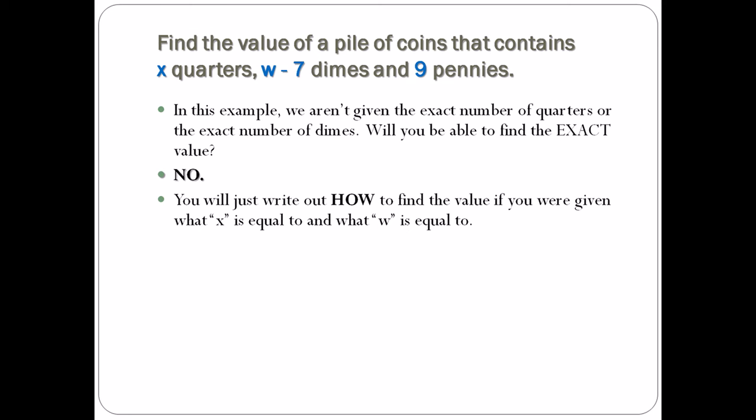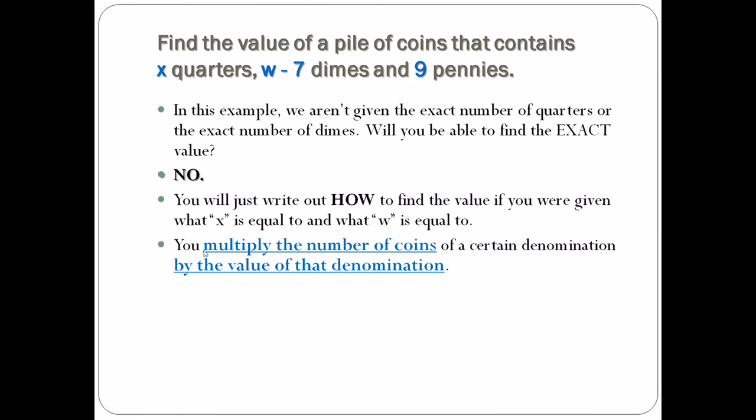We need to write how, so we are going to write an equation to find out how. We're going to use the same thing we did just a minute ago. We're going to multiply the number of coins of a certain denomination by the value of that denomination. I have x quarters—what am I going to multiply x by? 0.25, that's correct, 25 cents. I have w minus seven dimes—what am I going to multiply it by? 0.1 or 0.10.